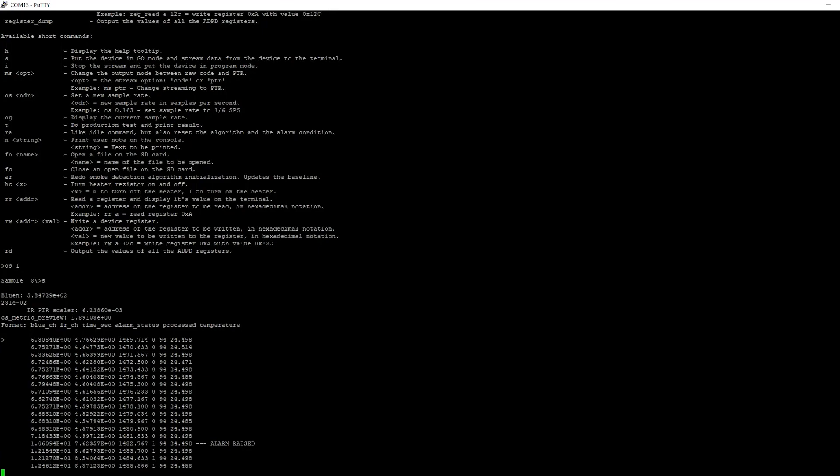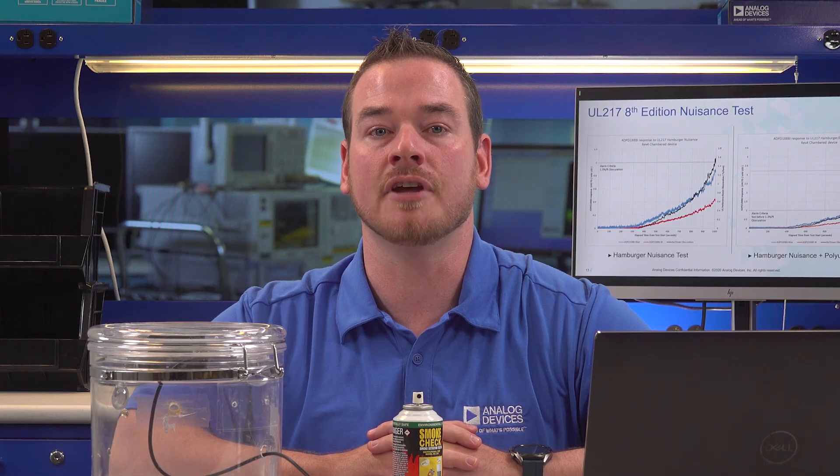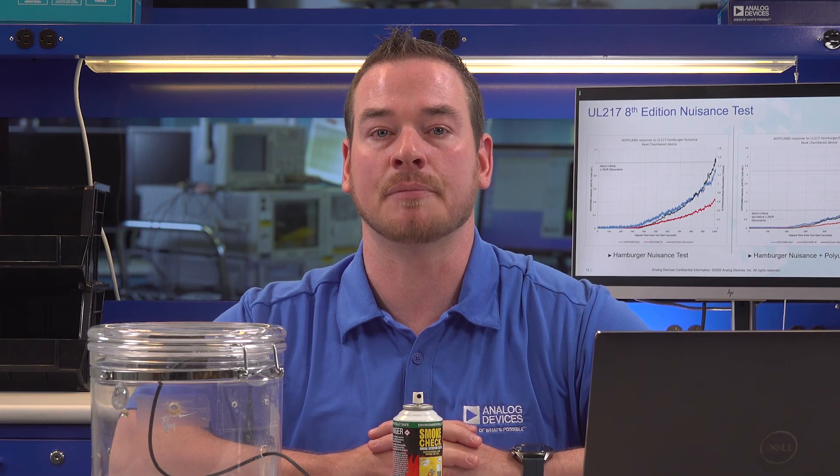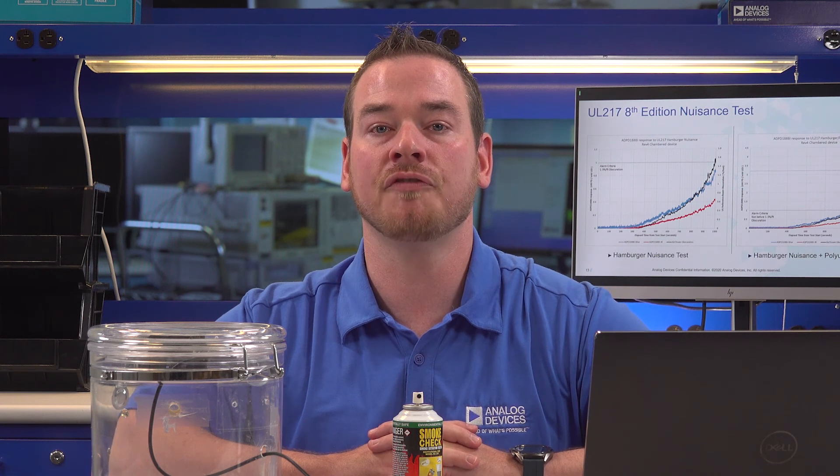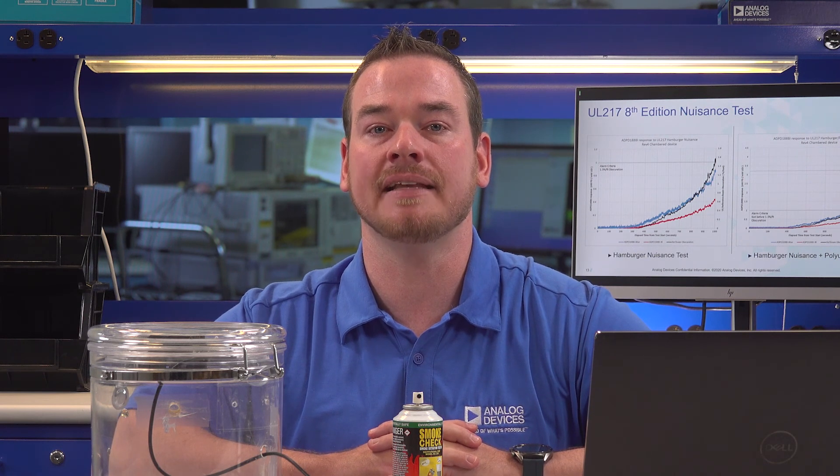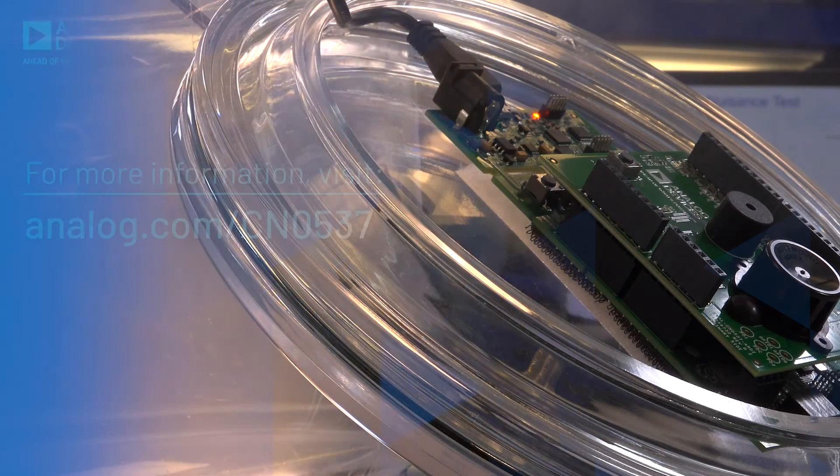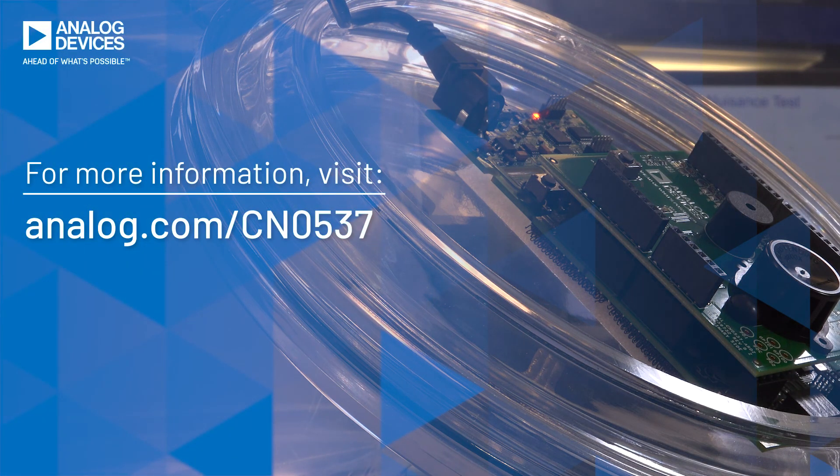And the alarm is actually going to sound. So there you have it, the UL217 smoke detector reference design demo. For more information and to view the complete list of offerings, please visit analog.com/cn0537. Thank you.